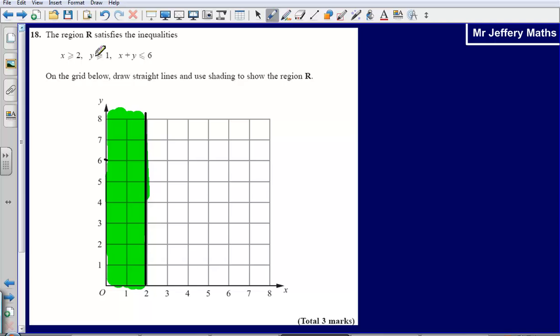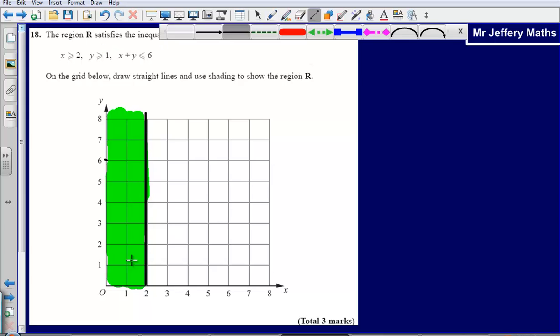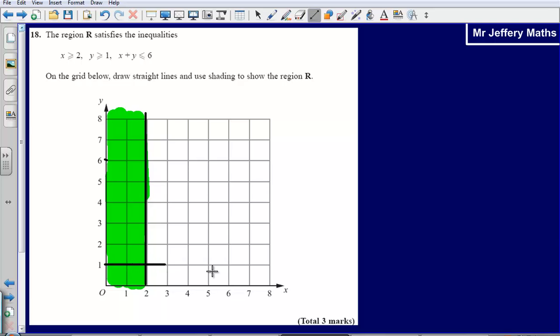Then we are told that y has to be greater than 1. So let's draw a line at y equals 1, so y is 1 here. And we are told that y has to be greater than 1. So that means my answer can't be in this part. I've just shaded it on the graph there either.